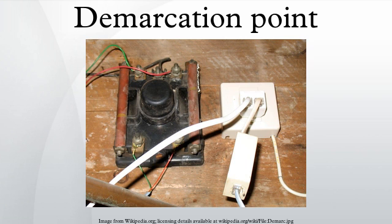As a result of deregulation of the telephone system, unbundling of the local loop, and lawsuits by companies wishing to sell third-party equipment to connect to the telephone network, there was a need to delineate the portion of the network owned by the customer and the portion owned by the telephone company or the common carrier. Where the portions meet is called the demarcation point.